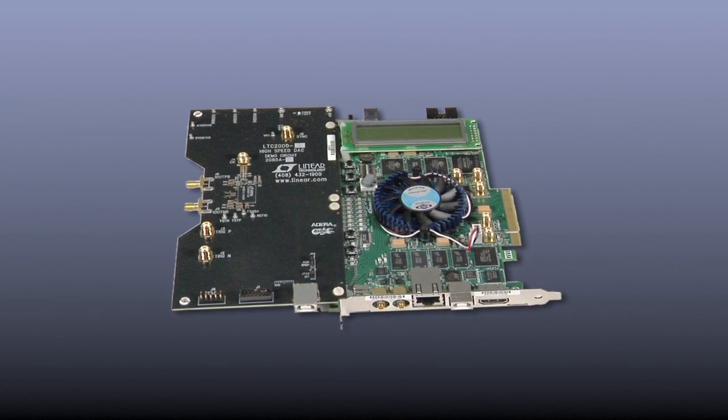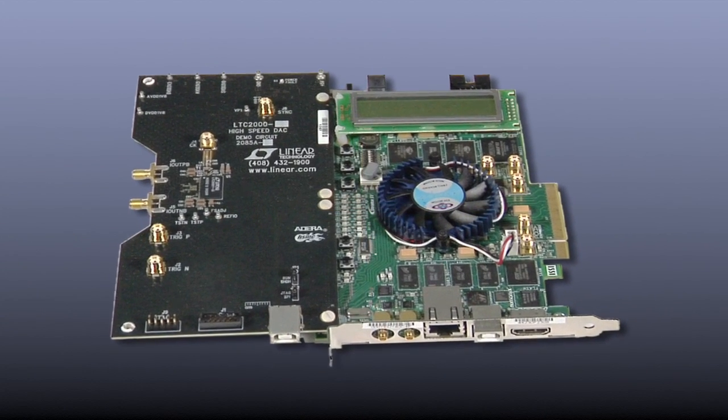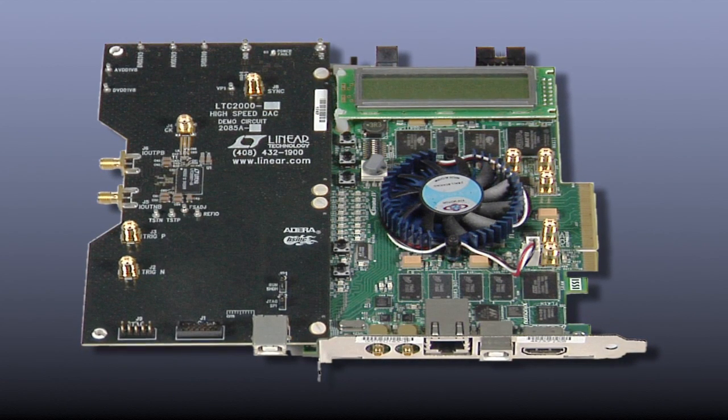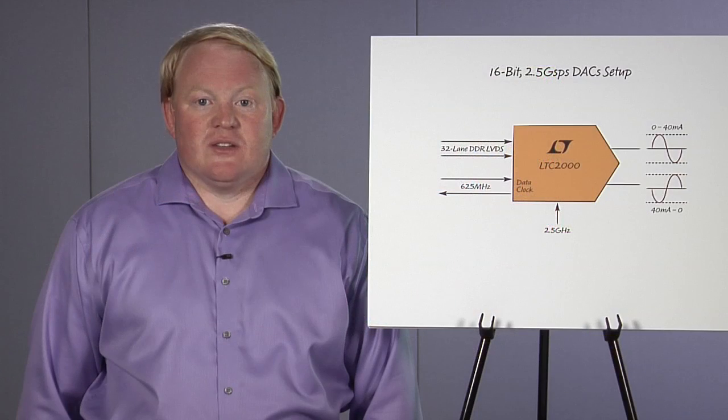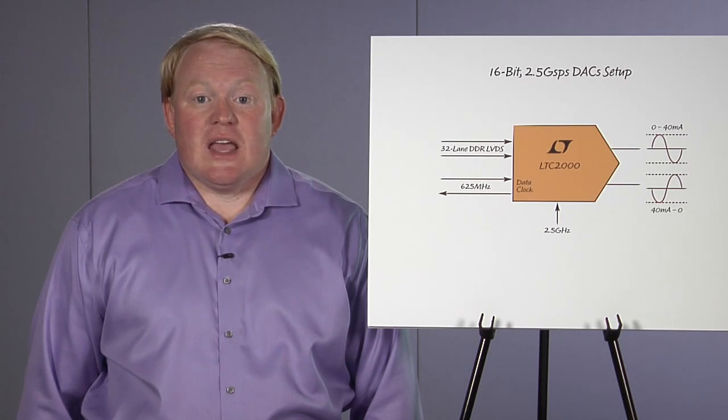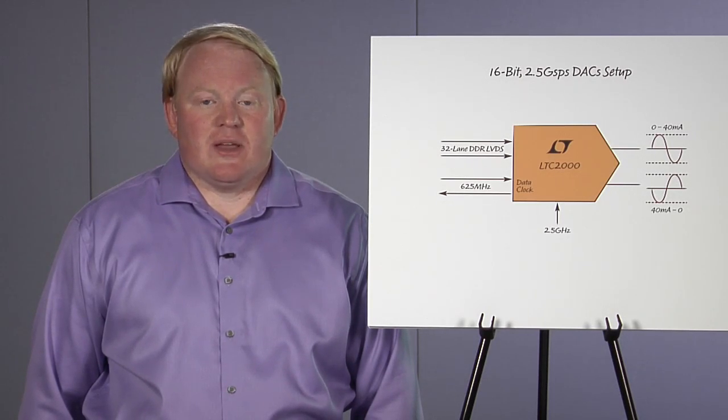With 40 milliamps of output current, the LTC2000 offers flexibility in output impedance. Its low additive phase noise makes the LTC2000 ideal for demanding communication systems where maximum performance is critical. The LTC2000 provides the performance and flexibility to be used in any demanding signal generation application.